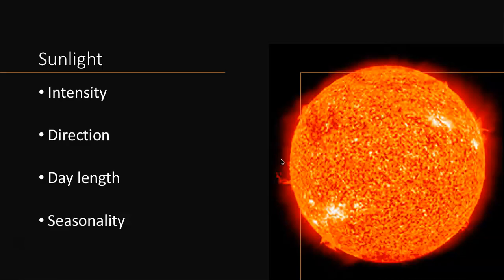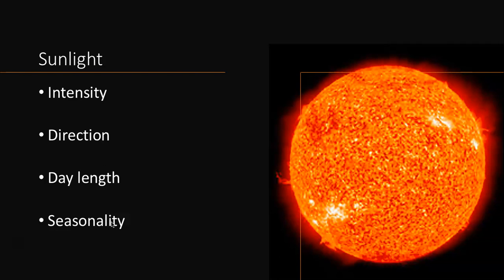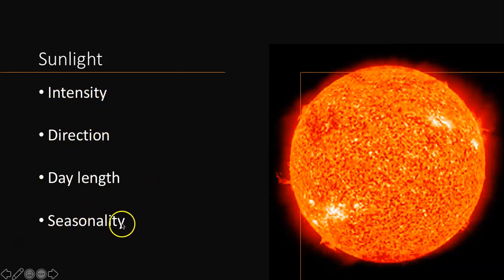The next abiotic factor is sunlight, and it has a lot of different components. We have a summer, spring, fall, and winter season, and with that we get changes in day length, the direction of sunlight, and the intensity of sunlight. Other places don't have as much seasonality as we do, and that also changes day length, direction of sunlight, and intensity of sunlight.